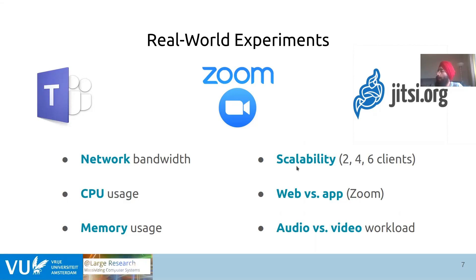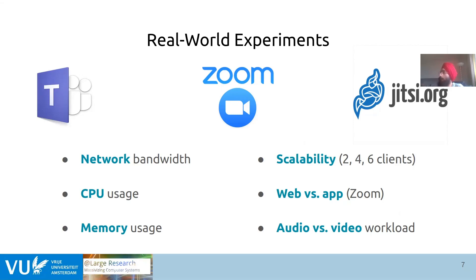The experiments were divided into three types: first, a scalability study to see how these systems perform with an increasing number of clients. Then, Zoom web and the desktop app were compared because the desktop app is more popular. Finally, we also compared audio and video workloads, as people mute themselves and turn off their videos during meetings, and we wanted to see the impact.